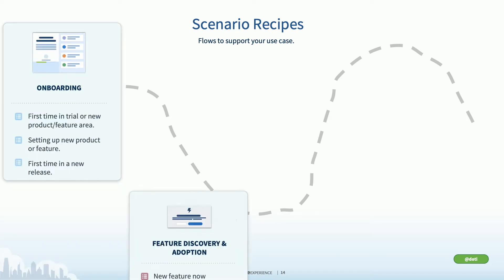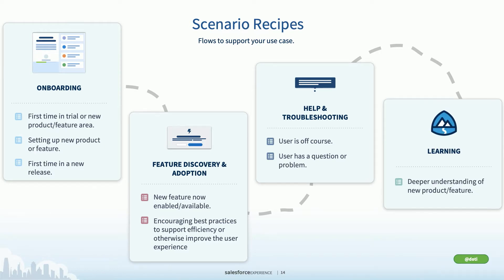These four scenarios illustrate the most common user engagement experiences: onboarding, feature discovery and adoption, help and troubleshooting, and learning and skill growth. It's helpful to understand the scenario you're dealing with as you use our guidelines. Certain mechanisms — whether a bubble, a welcome mat, or a help menu contextual article — all have pros and cons for each scenario. These guidelines are example flows and recipes, not meant to be used as-is. They're meant to be mixed and matched in the way that best suits your needs, but serve as a framework to inspire and give you examples.